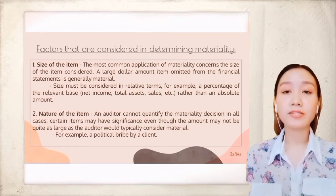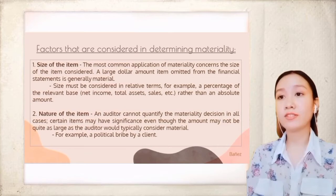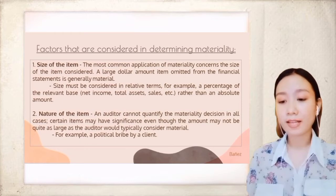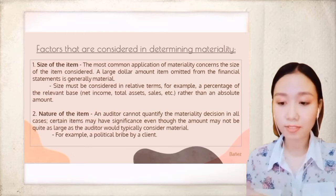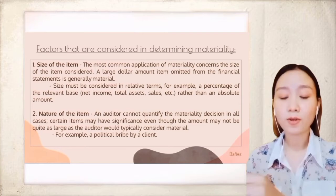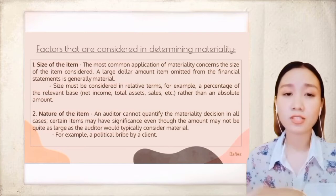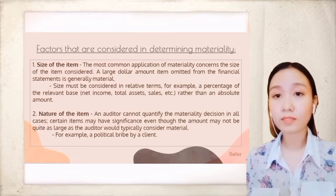The second factor is the nature of the item. An auditor cannot quantify materiality decisions in all cases. Certain items may have significance even though the amount may not be as large as the auditor would typically consider material. For example, using Company A's materiality threshold of $250,000, a political bribe of $100,000 would be considered material because of its sensitive nature and its effect on the company's financial statements — users would need to be informed.